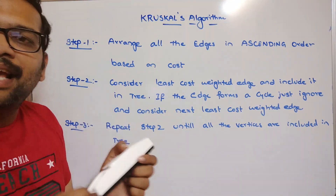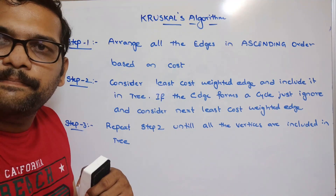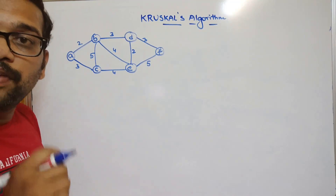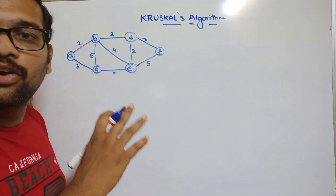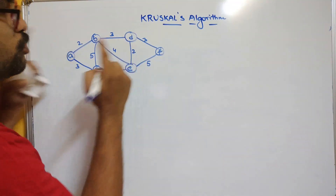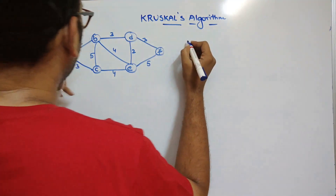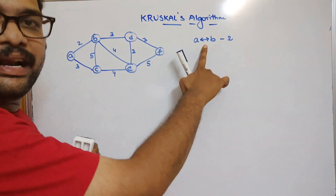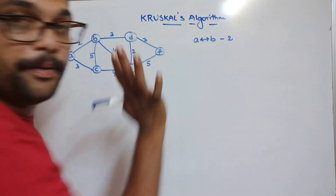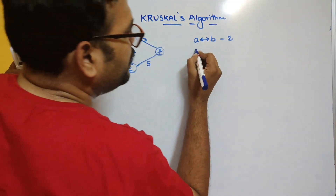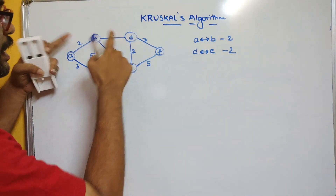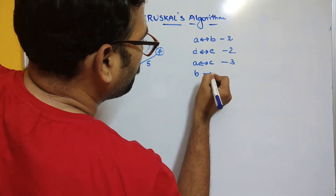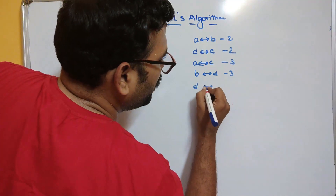By following these steps we can find the minimum cost spanning tree using Kruskal's algorithm. Now let's see an example. We have a graph and we need to find the minimum cost spanning tree. Step one: arrange all edges in ascending order by cost. The least cost edges with cost 2 are: A–B (cost 2) and D–E (cost 2). Then cost 3: A–C (cost 3), B–D (cost 3), and D–F (cost 3).